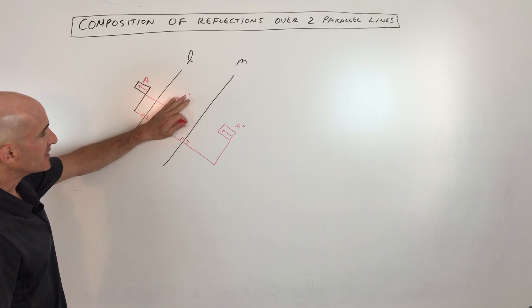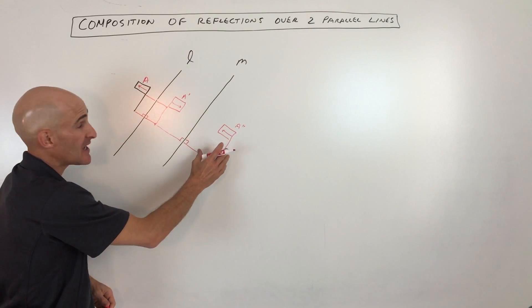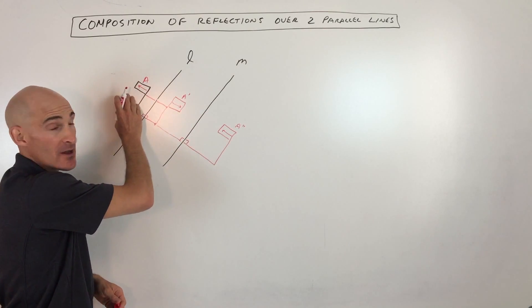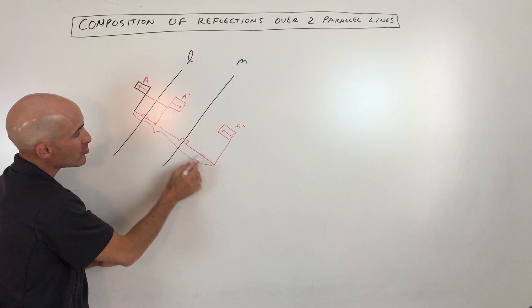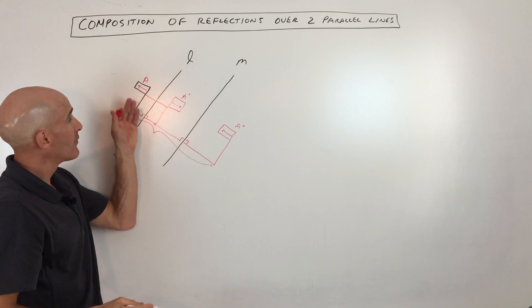What ends up happening is you reflect it and you reflect it again. Now it's in the same orientation as it was originally. But what happened is the figure actually slid, it actually translated, from here to here.